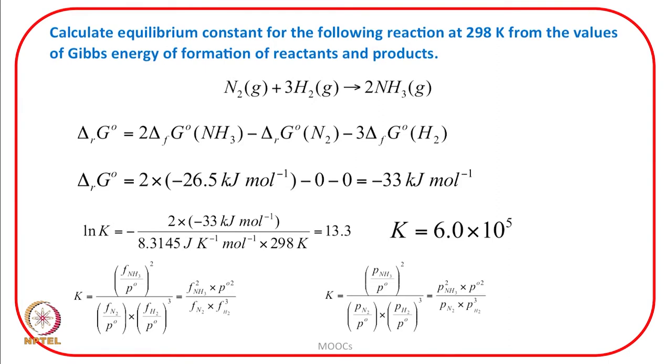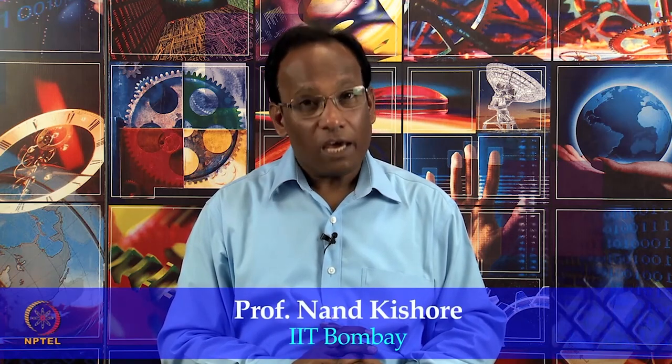In this lecture, we discussed how to derive a general relationship between standard reaction Gibbs energy and equilibrium constant. We also discussed that the thermodynamic equilibrium constant is a dimensionless quantity, because it is a ratio of activities of products and reactants, and activities are dimensionless. We will discuss more about the thermodynamic equilibrium constant and practical equilibrium constant in the next lecture. Thank you very much.